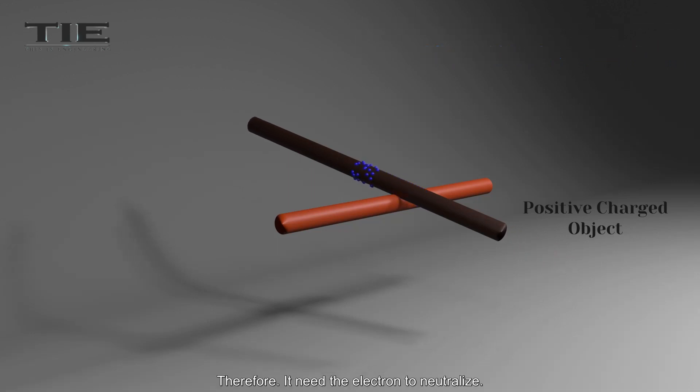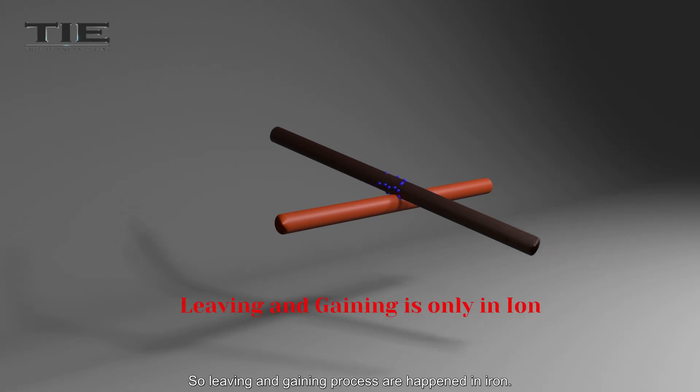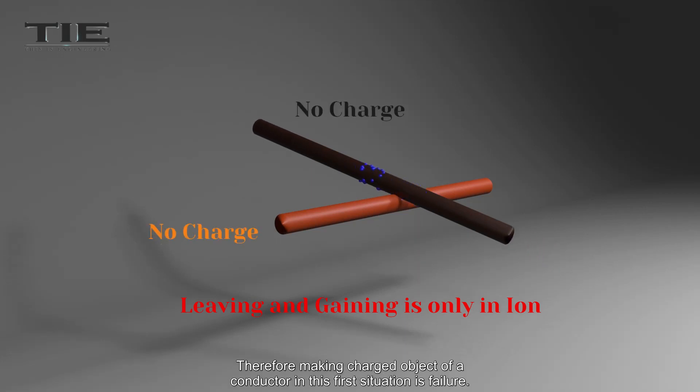Therefore, it needs electrons to neutralize. So again it gains the same electrons. So leaving and gaining processes are happened in iron. Therefore, making a charged object of a conductor in this first situation is failure.